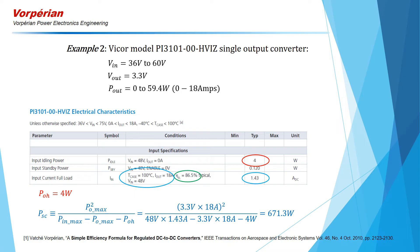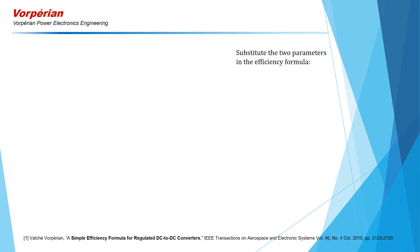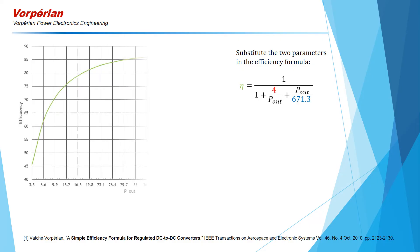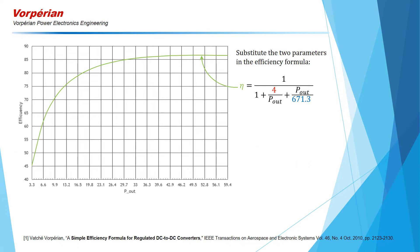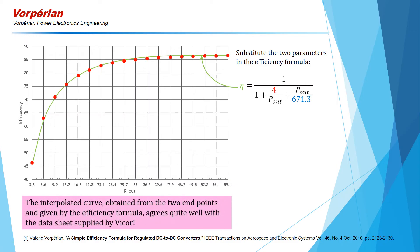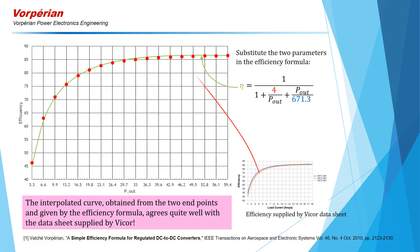When we substitute these two parameters in the efficiency formula, we obtain the following graph. We then superimpose the measured efficiency values and see that the agreement is very good. In fact, these data points were transcribed from the reported efficiency curve in the datasheet of this converter.